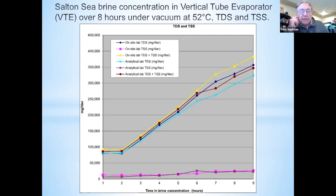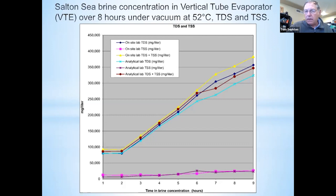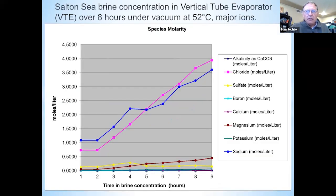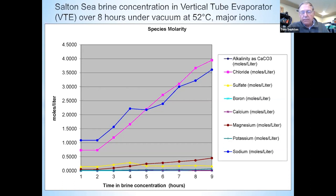Looking at the major ions during the brine concentration: sodium and chloride — the dark blue and purplish lines — show the behavior of the dominant ions through the concentration process.